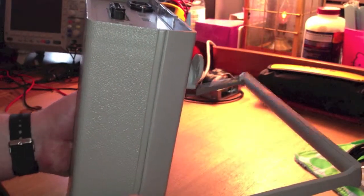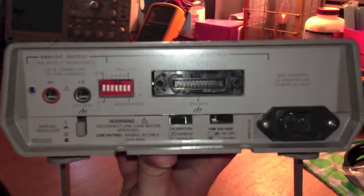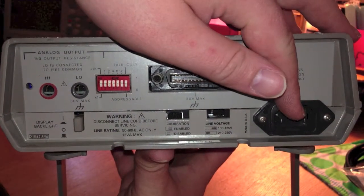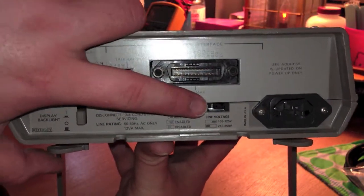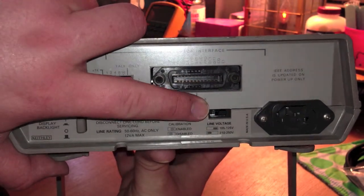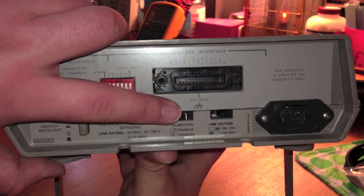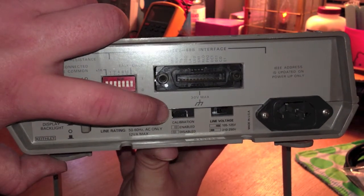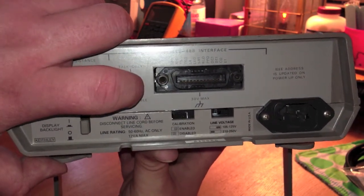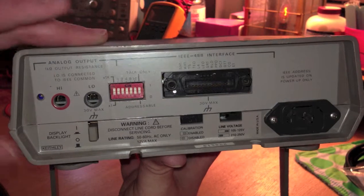And then we switch this around to the back. On the back here, we've got your normal IEC power connector. Over here, you can go between 210, 250, and 105, 125 with that switch. Now, this is interesting. This is your calibration switch. It should normally be in the disabled position over to where my finger is. Flop it over the other way, and that enables calibration. This turns on and off the backlight.